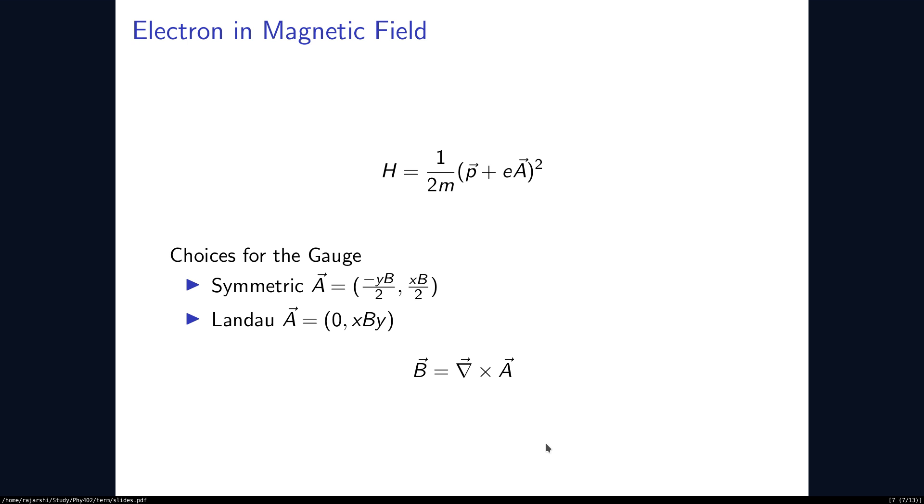To understand this quantum phenomena, we have to understand the quantum mechanics of the electron in a magnetic field. For doing so, we have to deal with the Hamiltonian in which the vector potential A is involved. And as the story goes with the vector potential A, there are several choices for A. Two of them are shown here. One is called the symmetric gauge and one is called the Landau gauge.